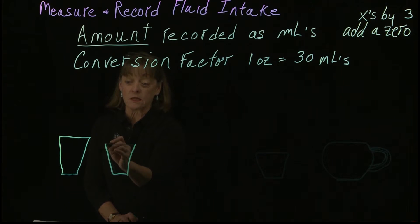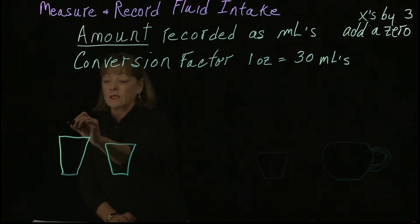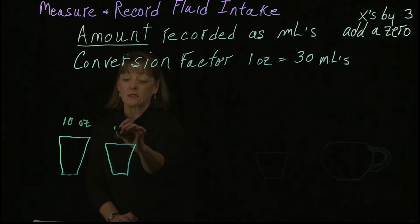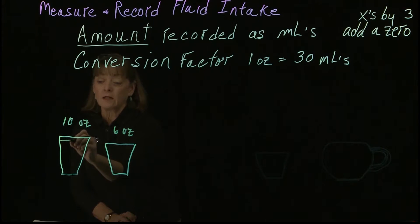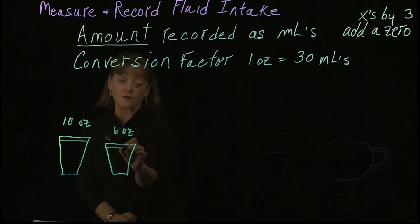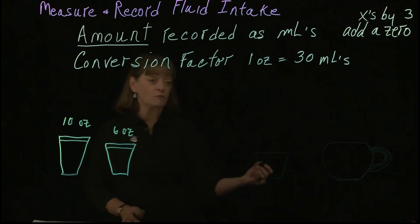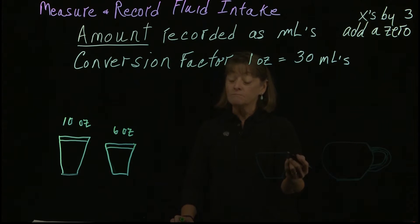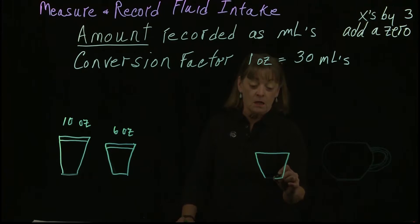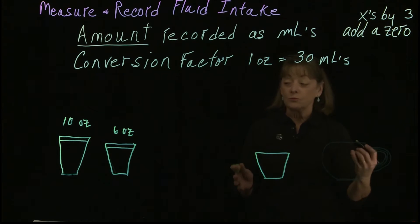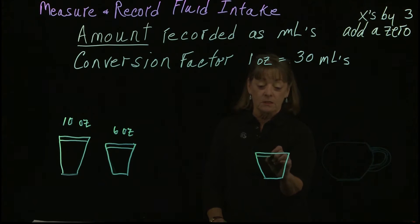This isn't necessarily perfectly to scale, but let's say this is a 10-ounce glass and this is a 6-ounce glass. And here's our fill line. Most of these things are manufactured to make it easier for us. They have a design on the glass, ridges or something that tells us what the fill line is without being actually marked.